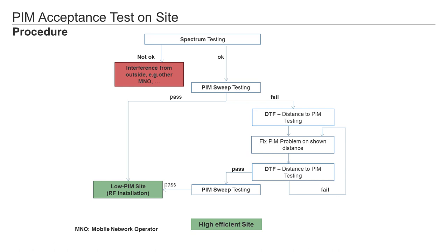PIM testing on a site should always start with the spectrum analyzer. As the system ultimately installed includes an antenna, we are testing in what is known as an open system. Different signals can be received by the antenna. If the spectrum analyzer shows no noise in the RX band, a PIM test can be started. If the spectrum analyzer shows interfering noise, the antenna should be disconnected and the transmission line terminated with a low PIM load. Stressed PIM testing or testing with CW power should be carried out. It is only with CW power testing that the transmission line is loaded in the same way as the BTS will be during subsequent operation. Only stressed PIM testing ensures high quality and reliable installations.